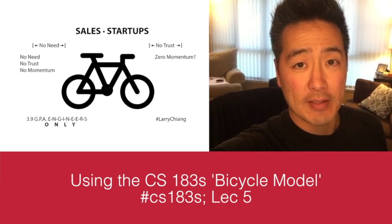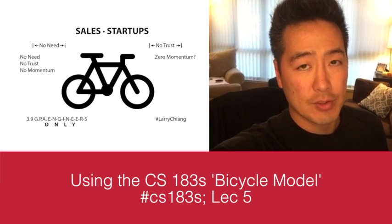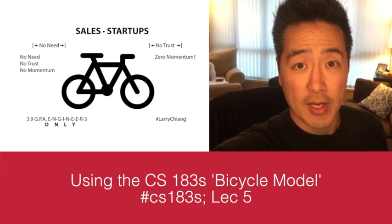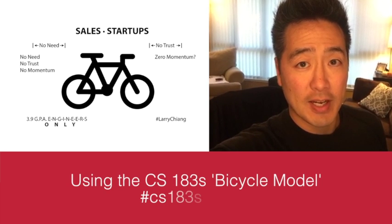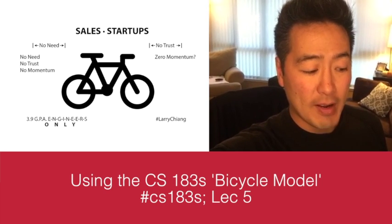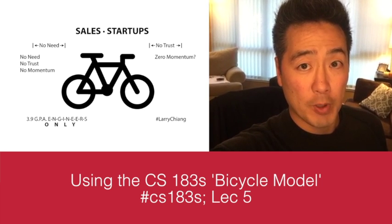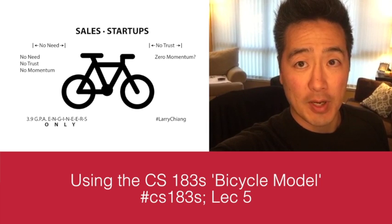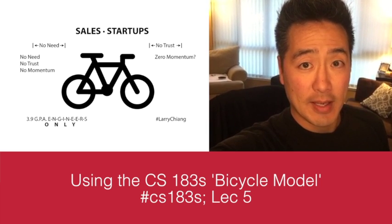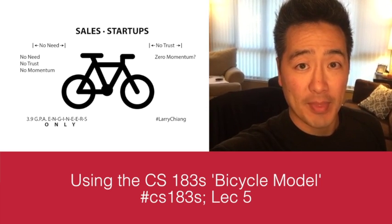In CS183S Lectures 1, 2, 3, and 4, and in lectures 6, 7, 8, and 9, we're selling things that we ourselves did not code. This is Lecture 5, and we're examining the future where we will be selling something that we made. The bicycle model is a framework for no need, no trust, and no momentum. Draw it out and keep it.